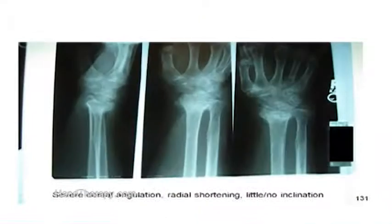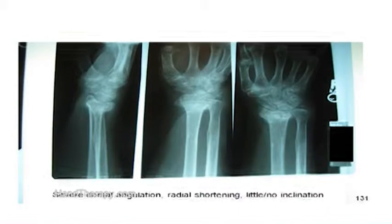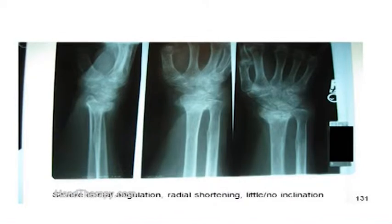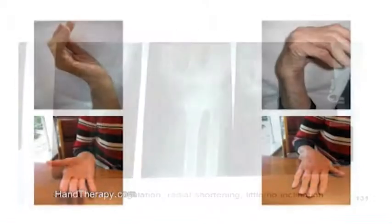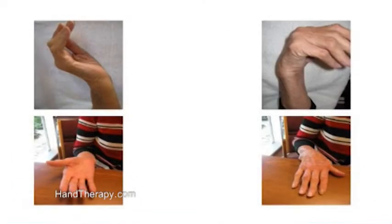If you take a look at slide number 131, you can see an example of severe dorsal angulation, radial shortening, with little to no inclination at all. On slide number 132, this is a demonstration of this person's range of motion with this fracture malunion.